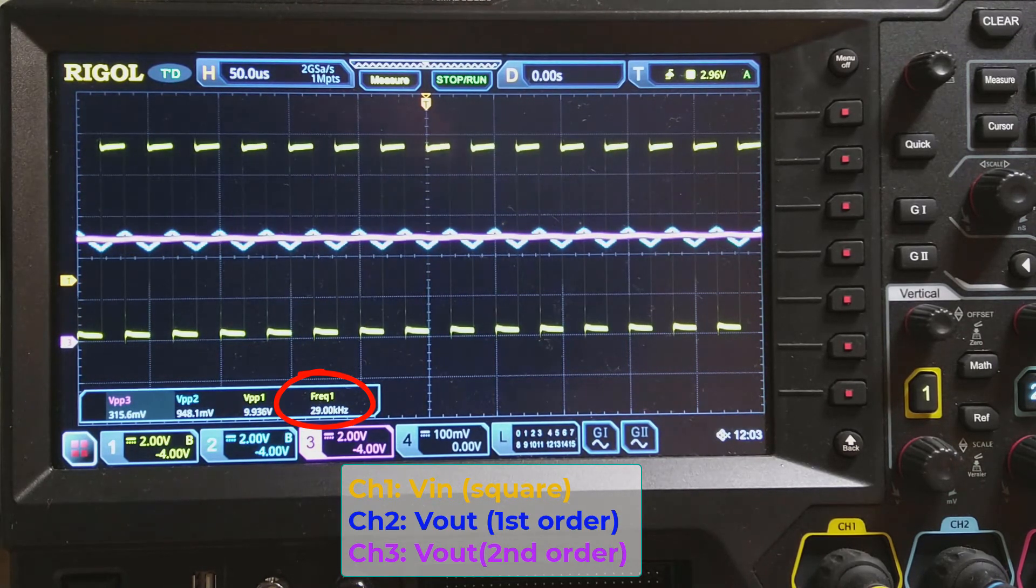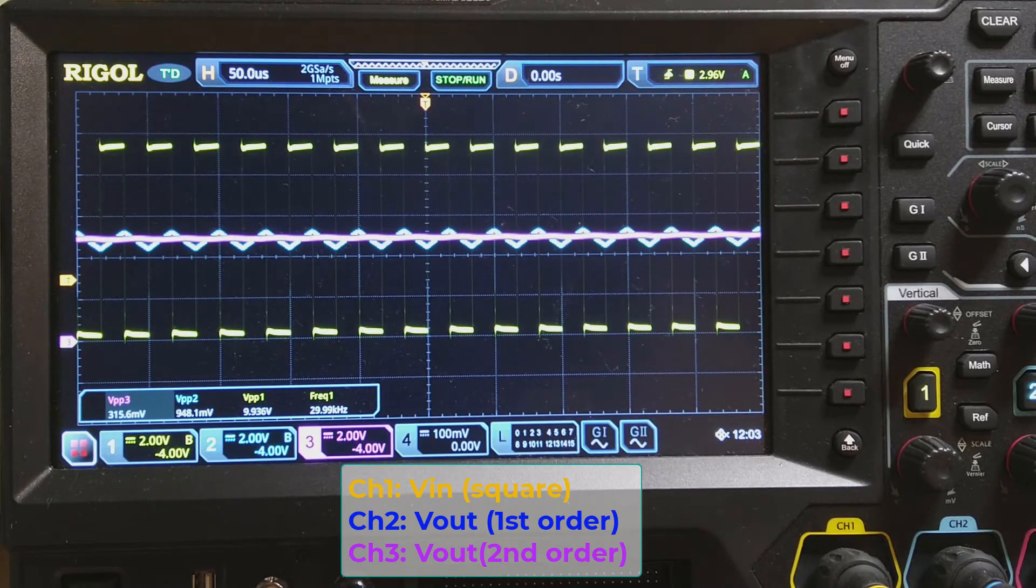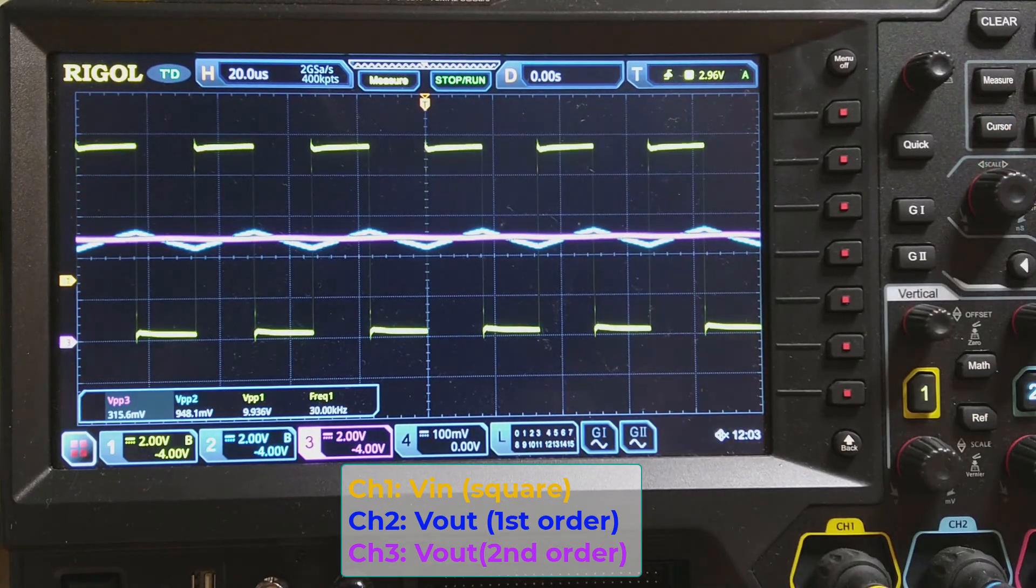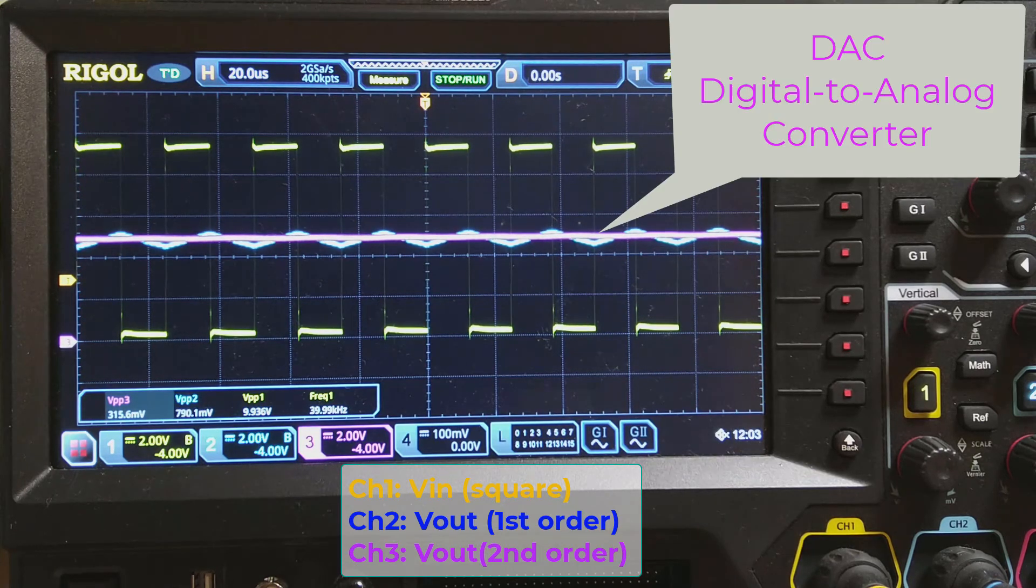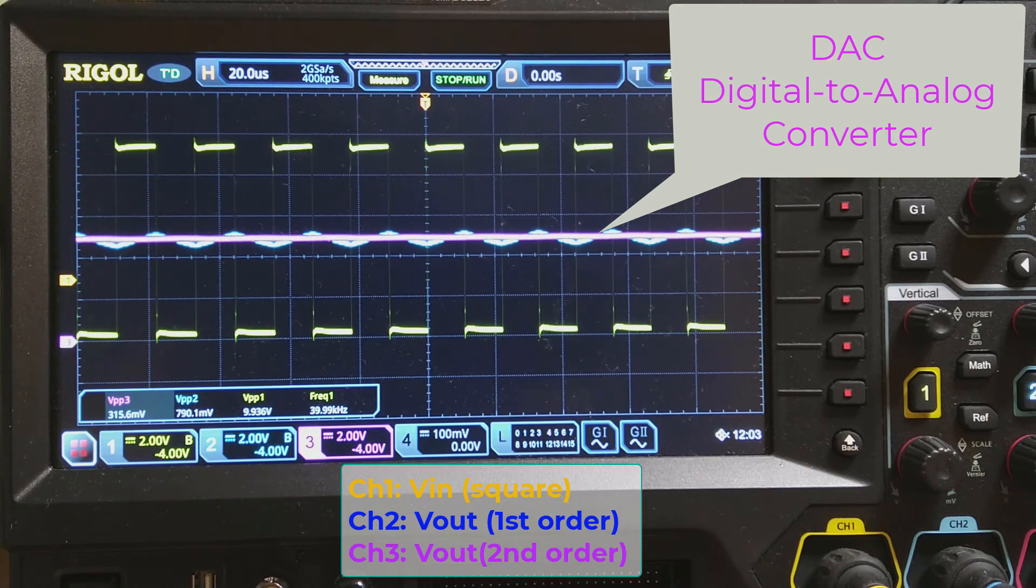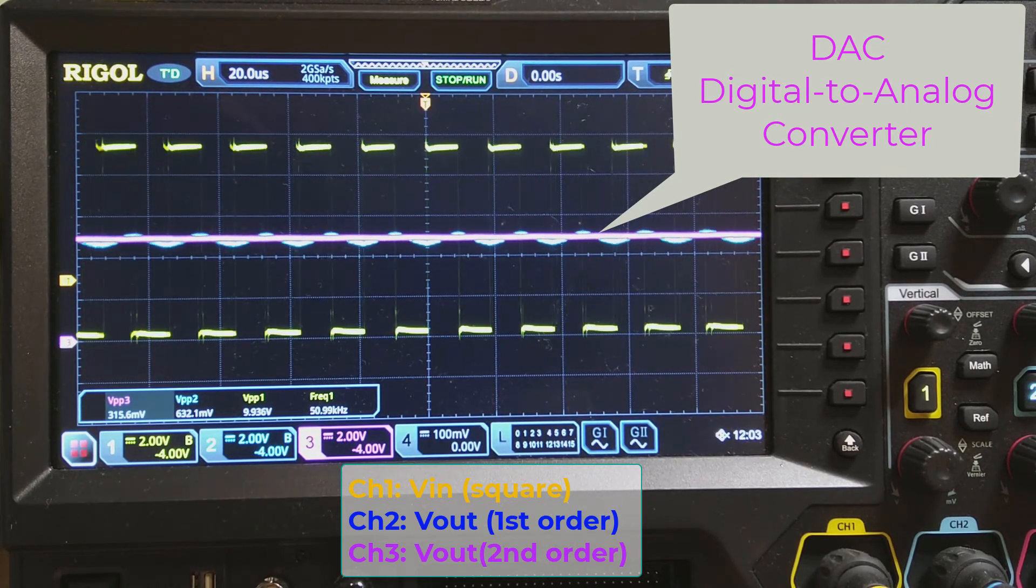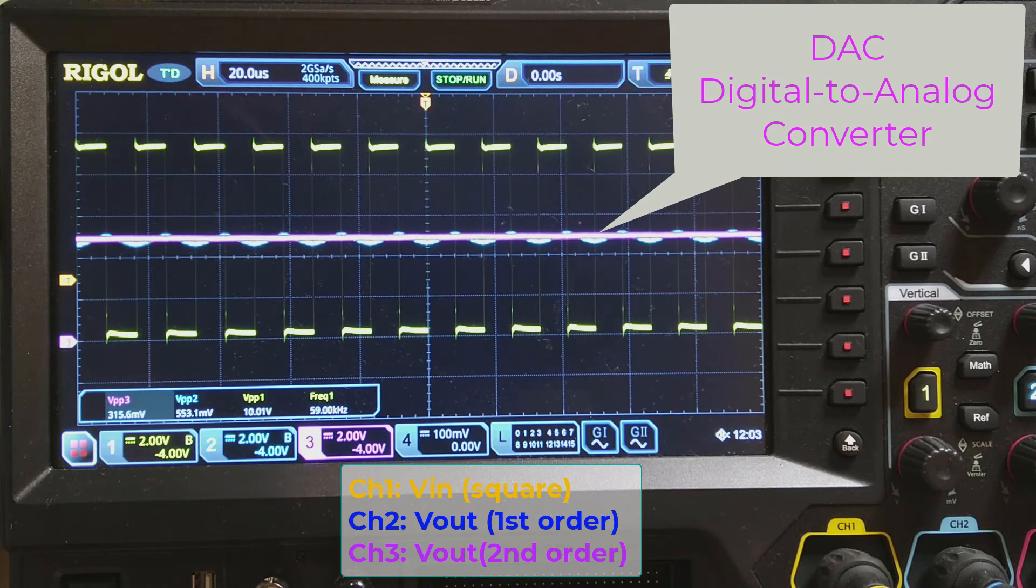Apparently, the second-order low-pass filter is more effective in filtering than the first-order. This shows a particular application that uses the second-order low-pass filter as a digital-to-analog converter. The digital PWM signal is converted to a nearly constant voltage using the second-order low-pass filter.